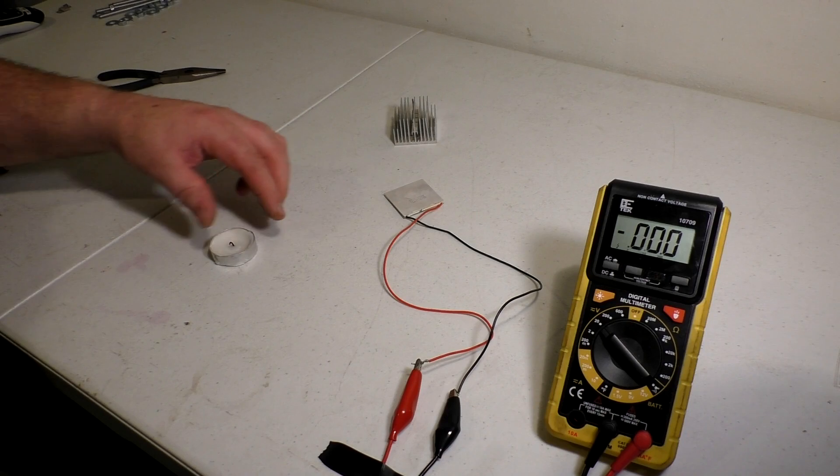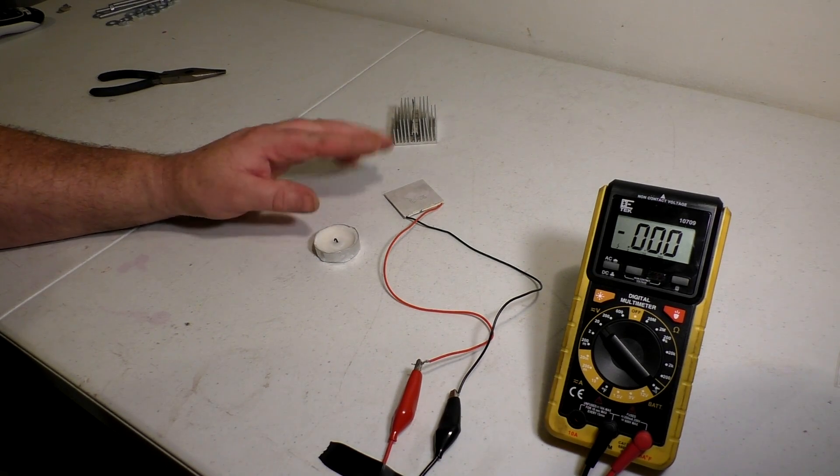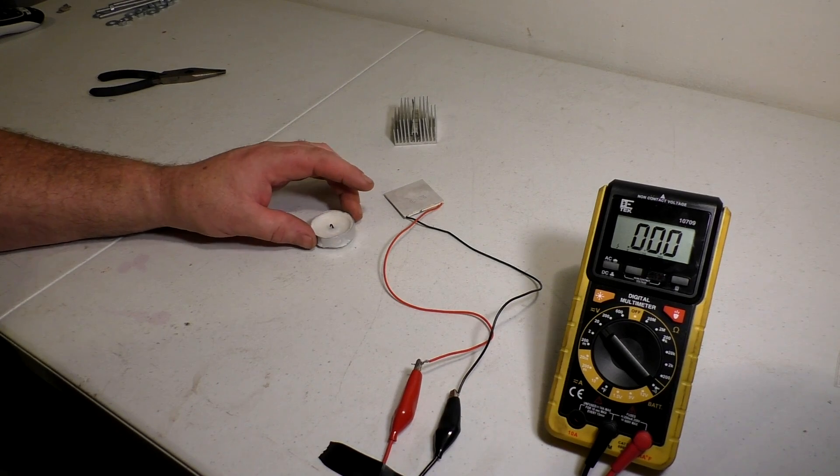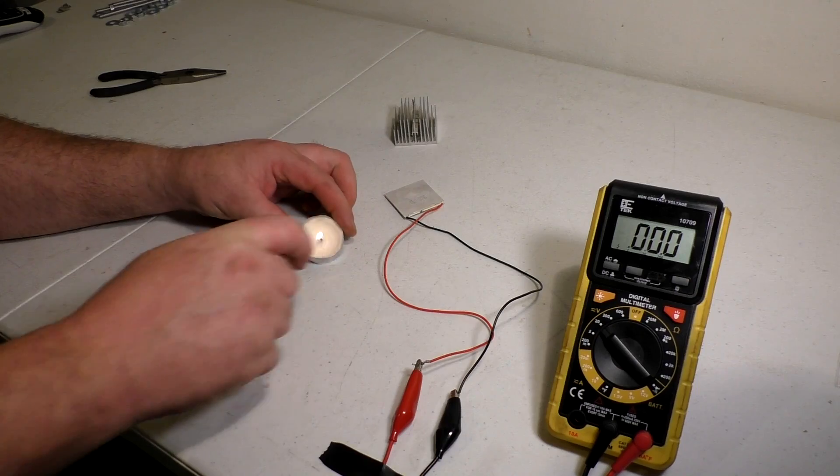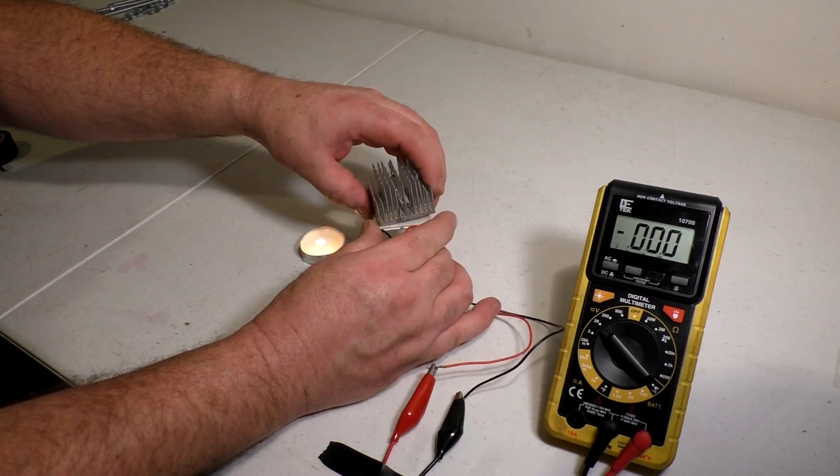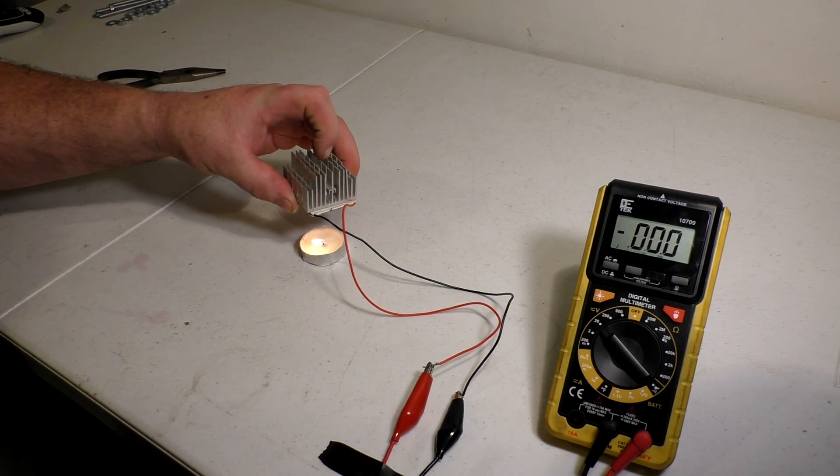Now there's another effect these discs have that I'm more interested in for this specific video, is they're able to produce electricity. So what I'm going to do is light a tea candle. We're going to take that disc. I'm going to put the heat sink on it. Try to hold all this on there right now and watch that voltage.